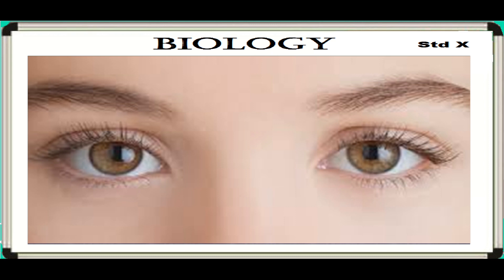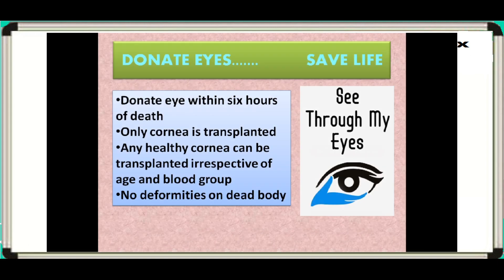Eye donation is the act of donating one's eye after death. Only corneal blind people can be benefited through this process, not other blind people. It is an act of charity purely for the benefit of society and is totally voluntary. We should encourage eye donation on a large scale to help those suffering from corneal blindness. The cornea is the clear tissue covering the front of the eye and is the focusing element. Vision is dramatically reduced or lost if the cornea becomes cloudy — this is known as corneal blindness.